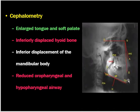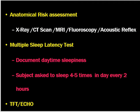Cephalometry is not commonly performed nowadays but can show large tongue and soft palate, inferiorly displaced hyoid bone, inferior displacement of the mandibular body, and reduced oropharyngeal and hypopharyngeal airway. Anatomical risk factors can also be assessed by X-ray, CT scan, MRI, and fluoroscopy. The Multiple Sleep Latency Test is performed to document daytime sleepiness, where the subject is asked to sleep four to five times a day every two hours.